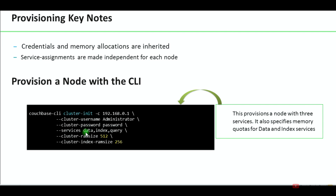Here is the command to provision a node with the CLI. We provide admin credentials and in the services field we allocate data, index, and query services. The cluster RAM size is 512 MB — this is for the data service. The cluster index RAM size is 256 MB for the index service. The query service does not require any RAM — this is a common interview question.